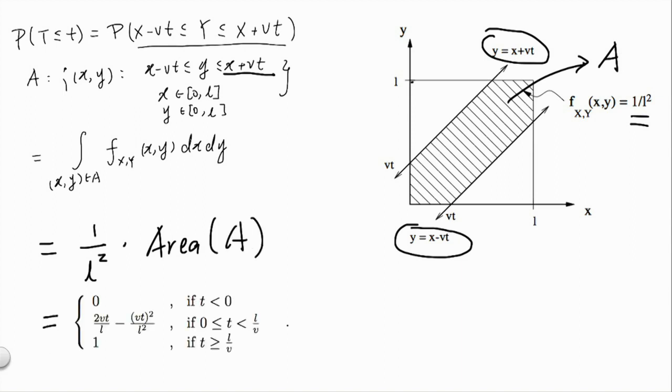Depending on the value of t, we'll get different answers. If t < 0, the area of A diminishes to nothing, so we get 0. If t > L/v, the area of A fills up the entire square, and we get 1. If t is somewhere between 0 and L/v, we will have 1/L² multiplied by the area looking like the shaded region.